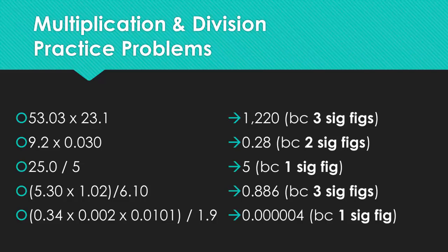Then the next answer is 0.28 because you're looking for 2 significant figures from the 0.030 and the 9.2. Then the next answer is 5 because the 1 significant figure from the divisor of 5. The next answer is 0.886 because you only needed 3 significant figures. If you look at all those numbers in the problem, they all had 3.